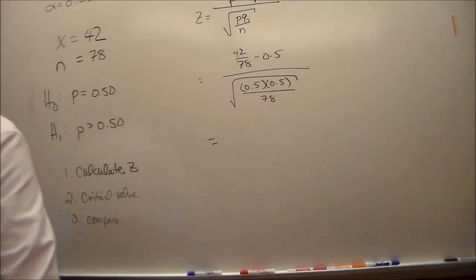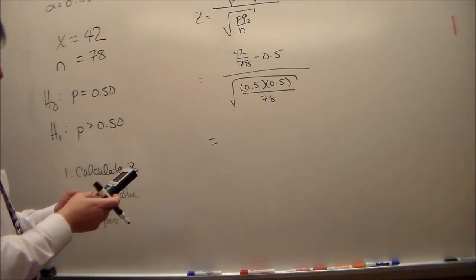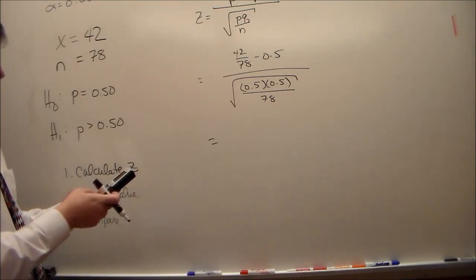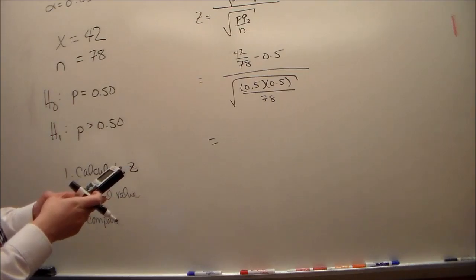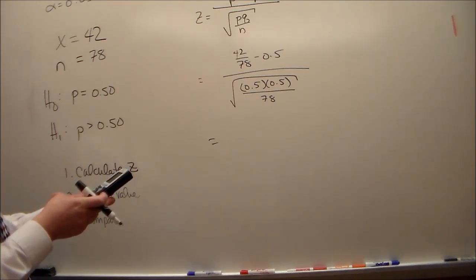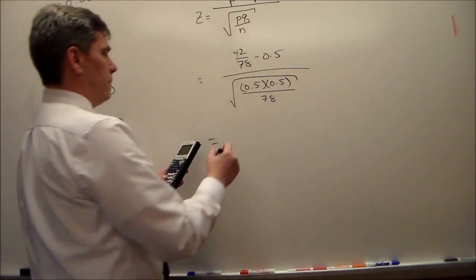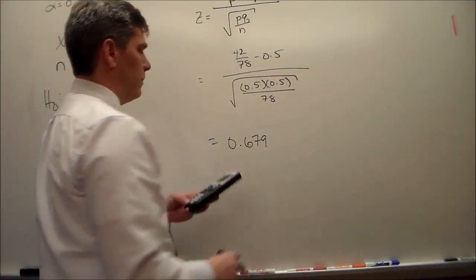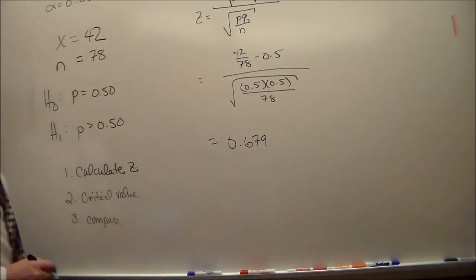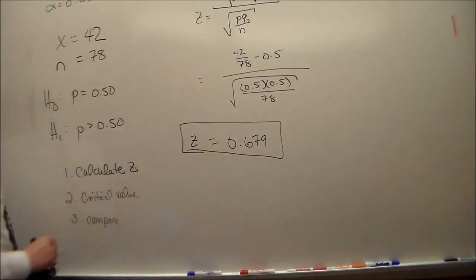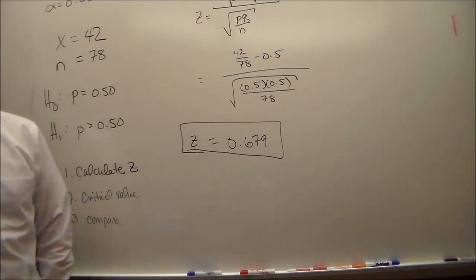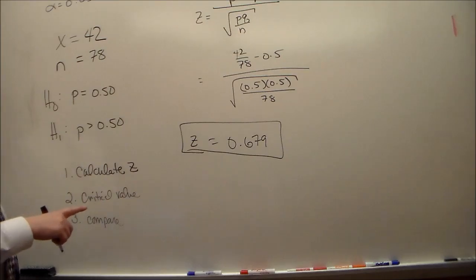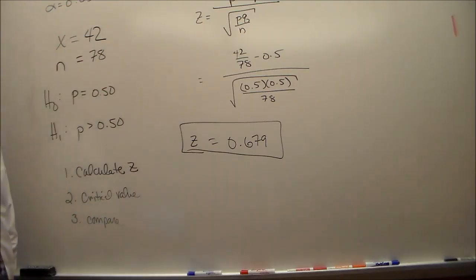Now from our calculator, this is equal to... so that's our test statistic. That's step one. Step two is to find the critical value. Since this is a z test statistic, we're going to go to the standard normal table, which is in the back of the book. Standard normal table requires that we know alpha.